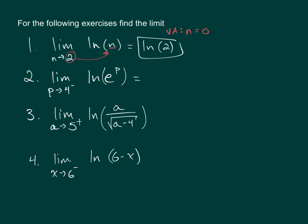So this limit simplifies to the limit as p approaches 4 from the left of p. Now we can just use direct substitution to put 4 in for p to get 4. So 4 is the answer for the second example.